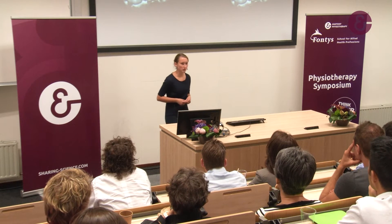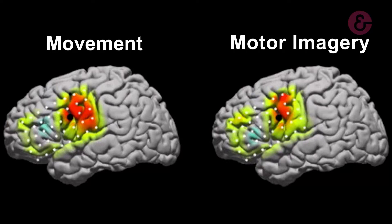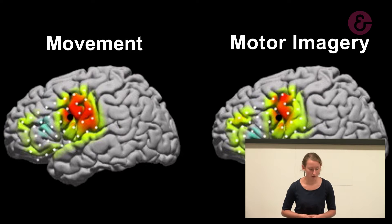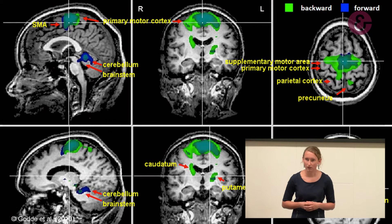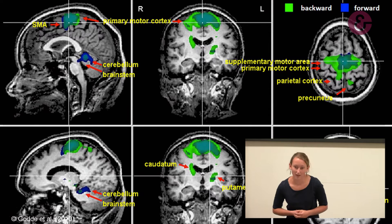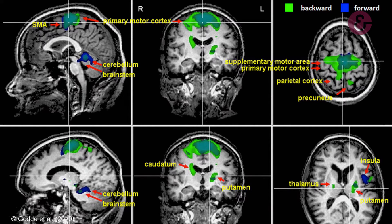So what is motor imagery about? Training a skill without physical activity. As you can see on the screen, brain activity during motor imagery is almost the same as during actual movement. The parts of the brain involved in motor imagery are the primary motor cortex, the supplementary motor area, the parietal cortex, the basal ganglia, the cerebellum, and a part of the brainstem.